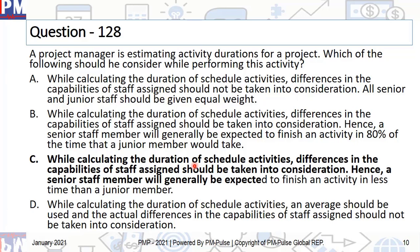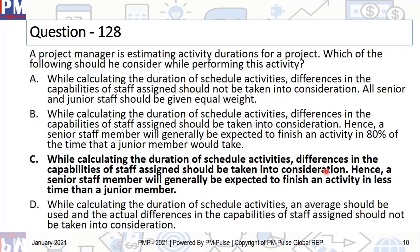While calculating the duration of schedule activities, differences in the capabilities of staff assigned should be taken into consideration. Hence, a senior staff member will generally be expected to finish an activity in less time than a junior member. I'm pretty sure you would have confused this with B. Between B and C, there's not much difference except that B gives a fixed percentage, which is not a good idea. Even within people who are good at their job — senior staff, experienced staff — they would not have a fixed percentage. Yes, they would definitely have better productivity, but we cannot put a fixed percentage to it.